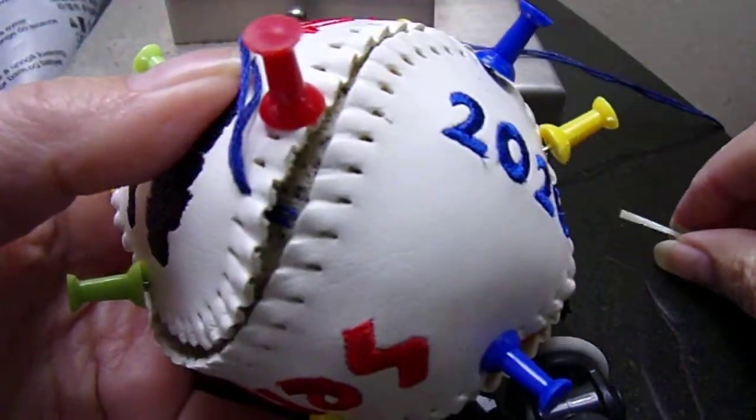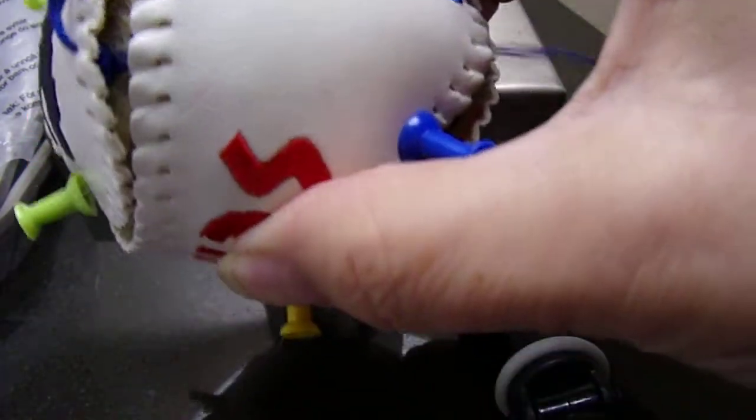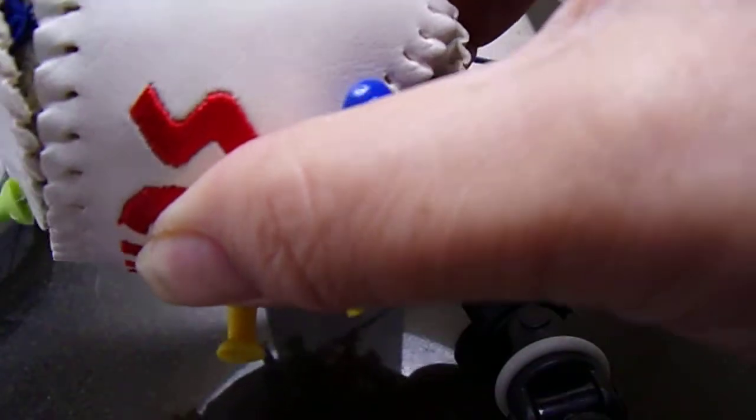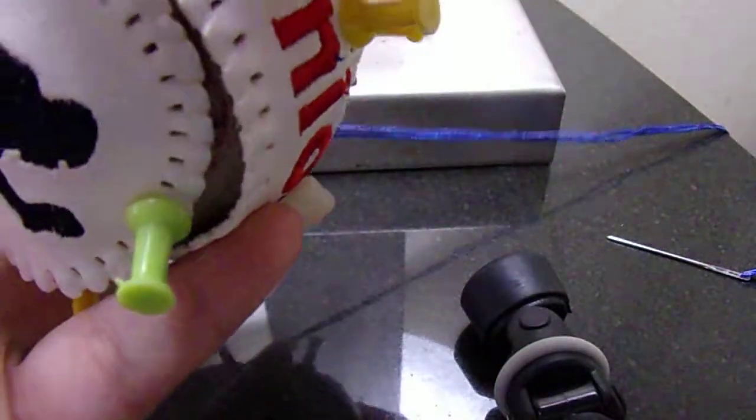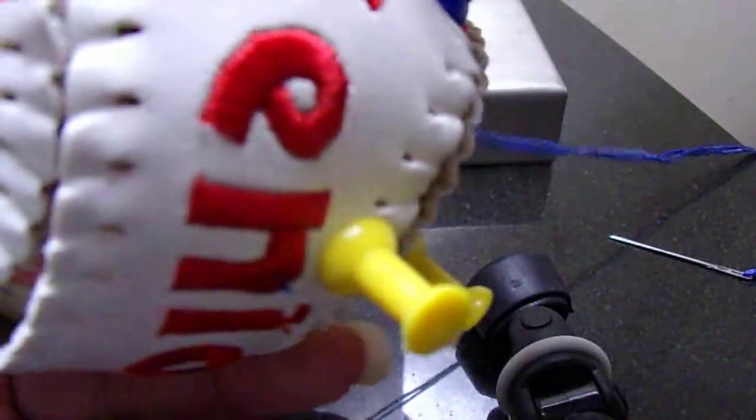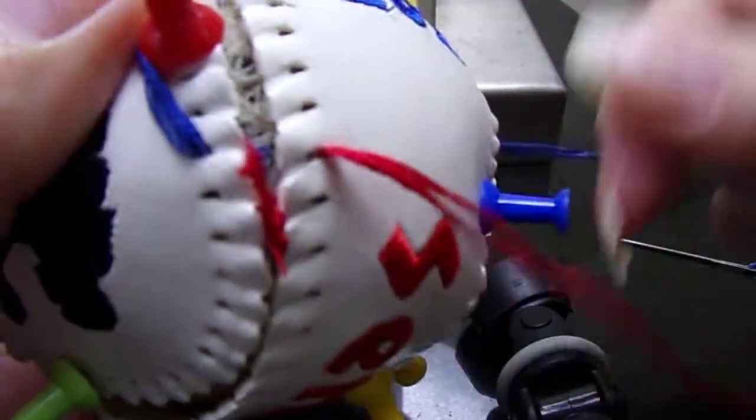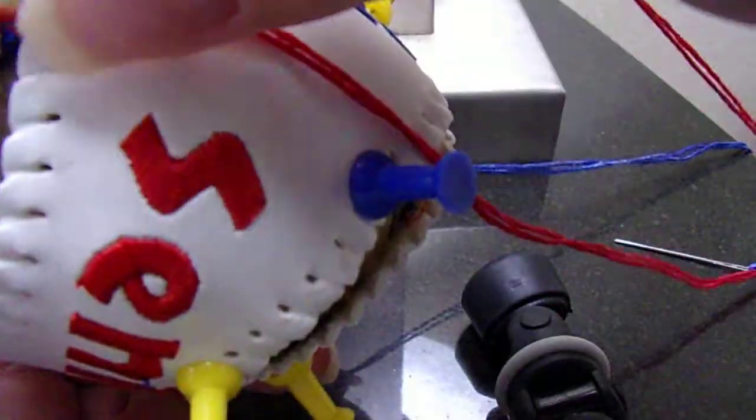Don't worry about your knot because your knot will be hid. I'm going to lay that needle down and I'm going to get my red one. I'm going to start my red one opposite of my blue one. Again, your knot will be hid down there under the cover, so don't worry about your knot.